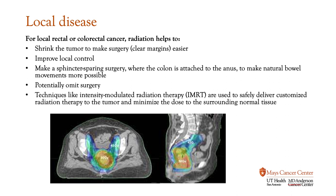Over here on the right is a radiation plan given to one of my patients. This color wash shows the hot red dose targeted on the tumor. The blue dose is a lower dose targeted at the lymph nodes to sterilize any cancer that may or may not be there. And you can see that everywhere in front, where there is no color wash, is us sculpting away from the bladder and bowel and precisely targeting the tumor and lymph nodes.